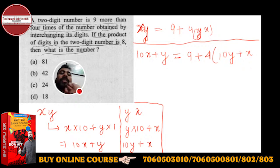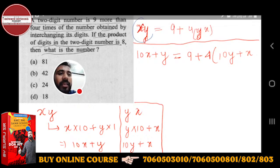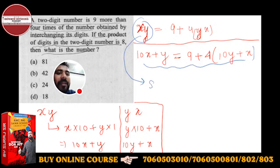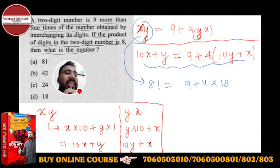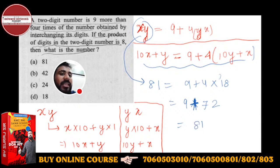I am showing the subjective method, but CDS students can also solve it by putting values from options. For the objective approach, let's try option 81: 81 = 9 + 4 × 18. Four times 18 is 72, and 72 + 9 = 81. Yes, this condition is satisfied. So the answer is 81.